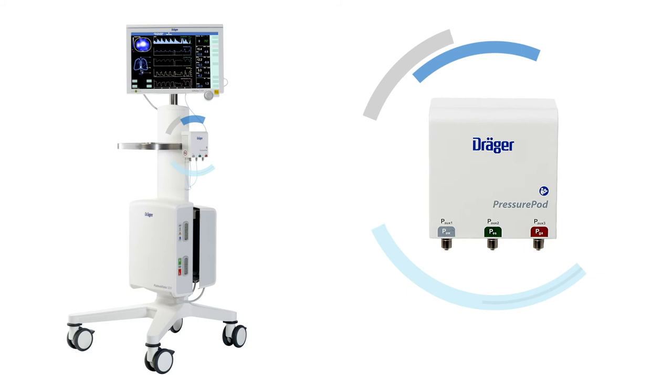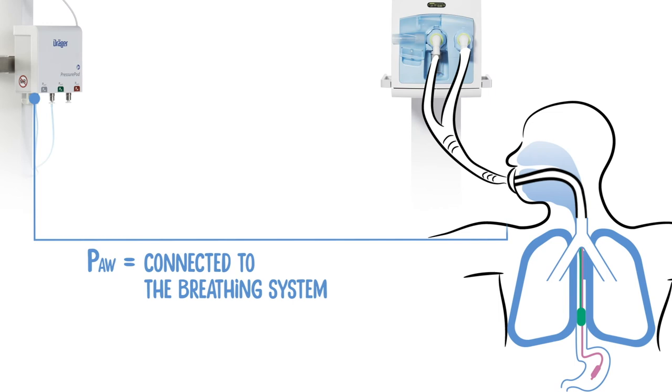With Pulmo Vista and Draeger's new pressure pod you are now able to get all this information. With the Draeger pressure pod you can conveniently measure and analyze airway pressure, esophageal pressure, and gastric pressure.